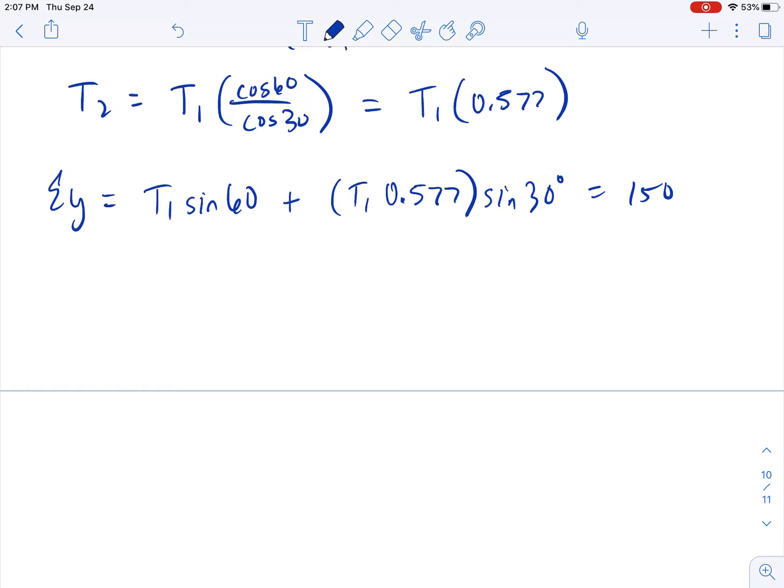All right, so T1 times sine of 60 gives me, I should have rewrote the other way, 0.866 T1 plus. And then we're going to do this here, 0.577 times the sine of 30, 0.288. So this is 0.288 T1 equals 150. And then we just add them up. So 0.866 plus 0.288 gives me 1.15 T1 equals 150. And then we will divide by 1.15 on both sides. So T1 comes out to be 130 newtons.